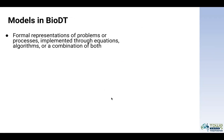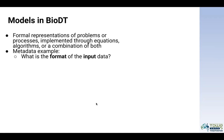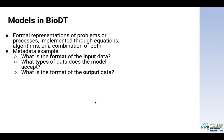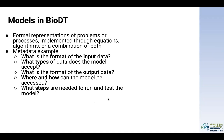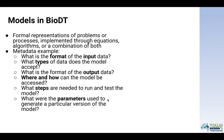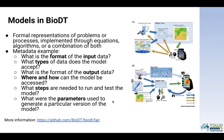Let's look into the models. Models for BioDT are formal representations of problems and processes implemented through equations, algorithms, or a combination of both. We're thinking about how to describe these models with different types of metadata that can work with different use cases across different domains. We're asking questions such as: what is the format of the input data? What types of data does the model accept? What is the format of the output data? Where and how can the model be accessed? What steps are needed to run and test the model? And are there parameters used to generate a particular version of the model? You can visit the GitHub repository for more information about this metadata and the profiles we're thinking about.